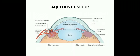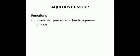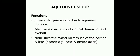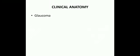Any interference with the drainage of aqueous humor into the canal of Schlemm results in an increase in intraocular pressure. The intraocular pressure is due to the aqueous humor; if excess, it raises the intraocular pressure. Aqueous humor maintains the constancy of the optical dimensions of the eyeball and nourishes the avascular tissues of the cornea and lens. It contains ascorbic acid, glucose, and amino acids.